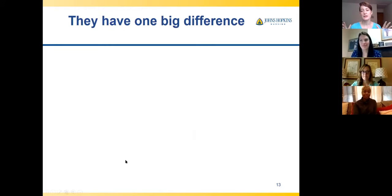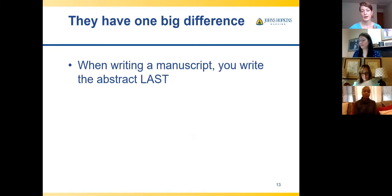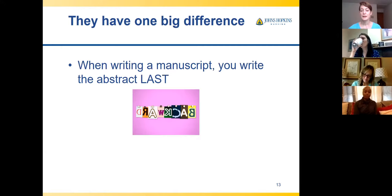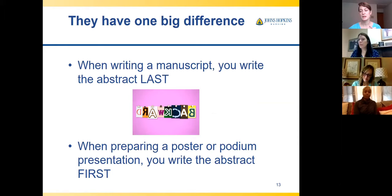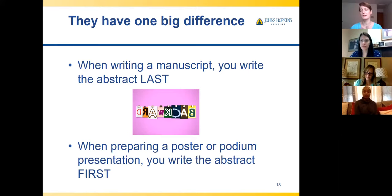There's one really big difference between the abstract associated with a manuscript and the one associated with a conference. When writing a manuscript, you typically write the abstract last. But for a poster presentation, you write the abstract first, because you're trying to get reviewers to want more information. In the manuscript, you've already shared all your content and then need to convey it succinctly.